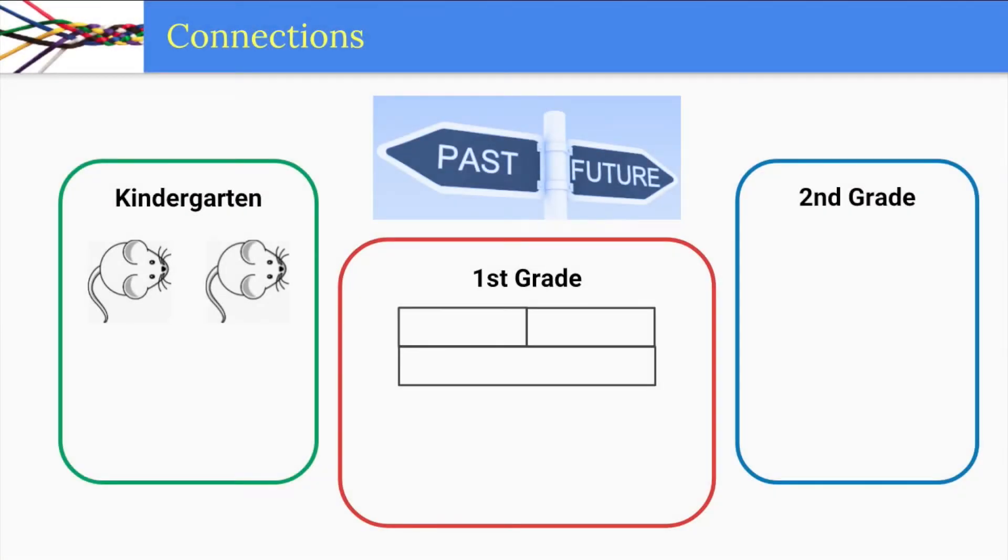It is important that students make connections between math they have already learned and math they are going to learn. In kindergarten, students explored only add-to, take-from situations. In Unit 1.6, students learned that unknowns could be in all positions in add-to, take-from, and put-together, take-apart situations.